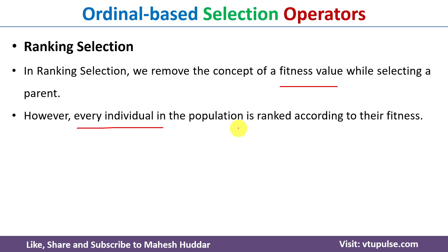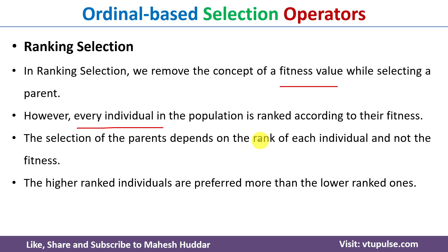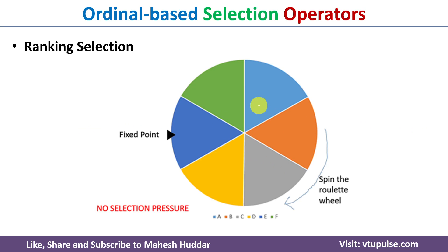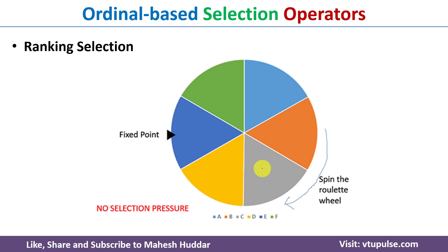In ranking selection, every individual in the population is ranked according to their fitness, but on the roulette wheel everyone is given equal-sized slices. For example, with six chromosomes, each has exactly the same size on the wheel. Because of this, whenever you rotate the wheel, almost every time a different chromosome is selected — there is no partiality or favoritism toward any particular chromosome. That is the advantage of ranking-based selection.